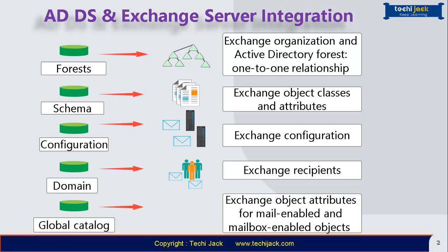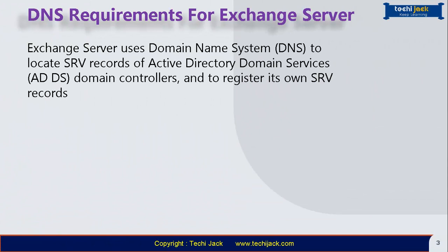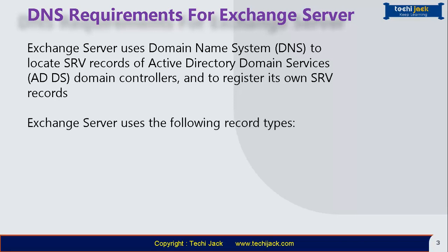Exchange Server uses DNS to locate SRV records of Active Directory Domain Services and to register its own SRV records. Exchange Server uses several DNS record types. SRV records are DNS records that identify servers providing specific services on the network — for example, an SRV resource record can contain information to help a client locate the domain controller in a specific domain or site.